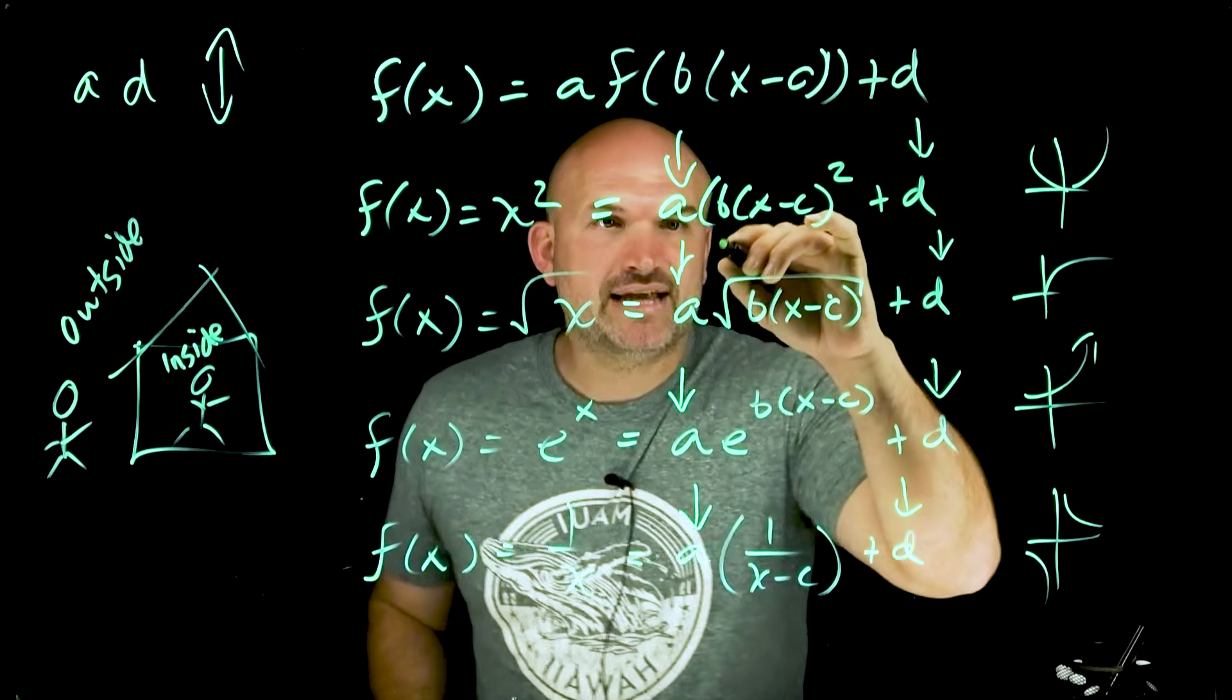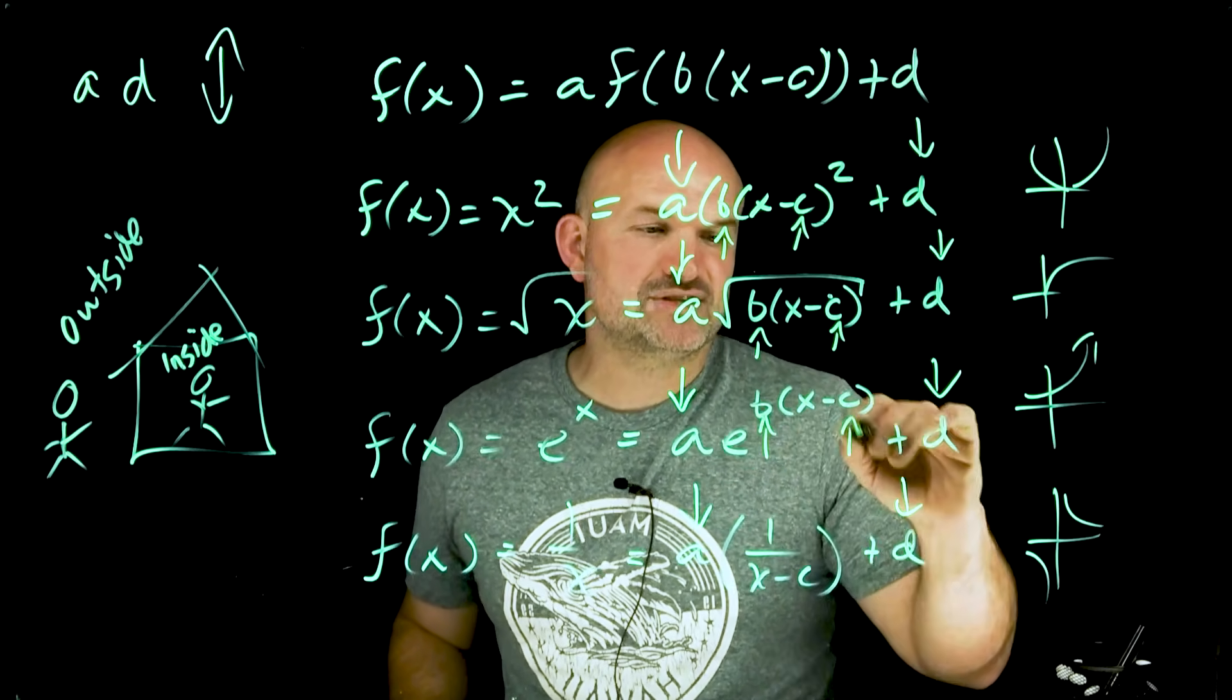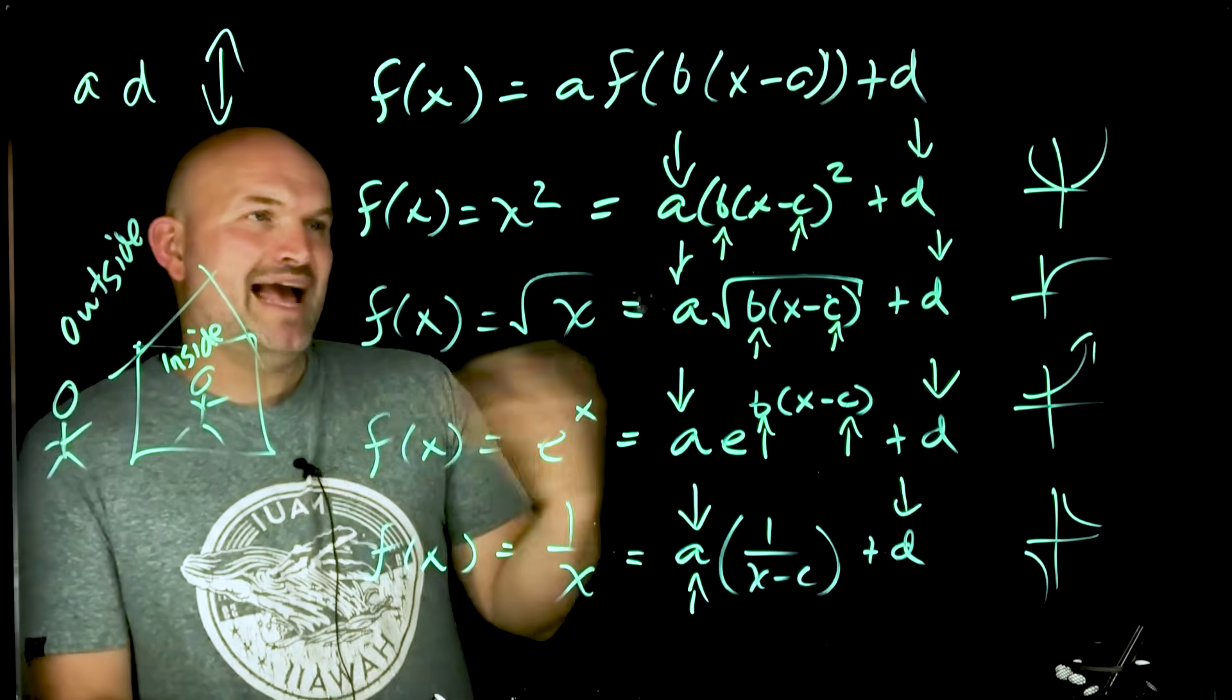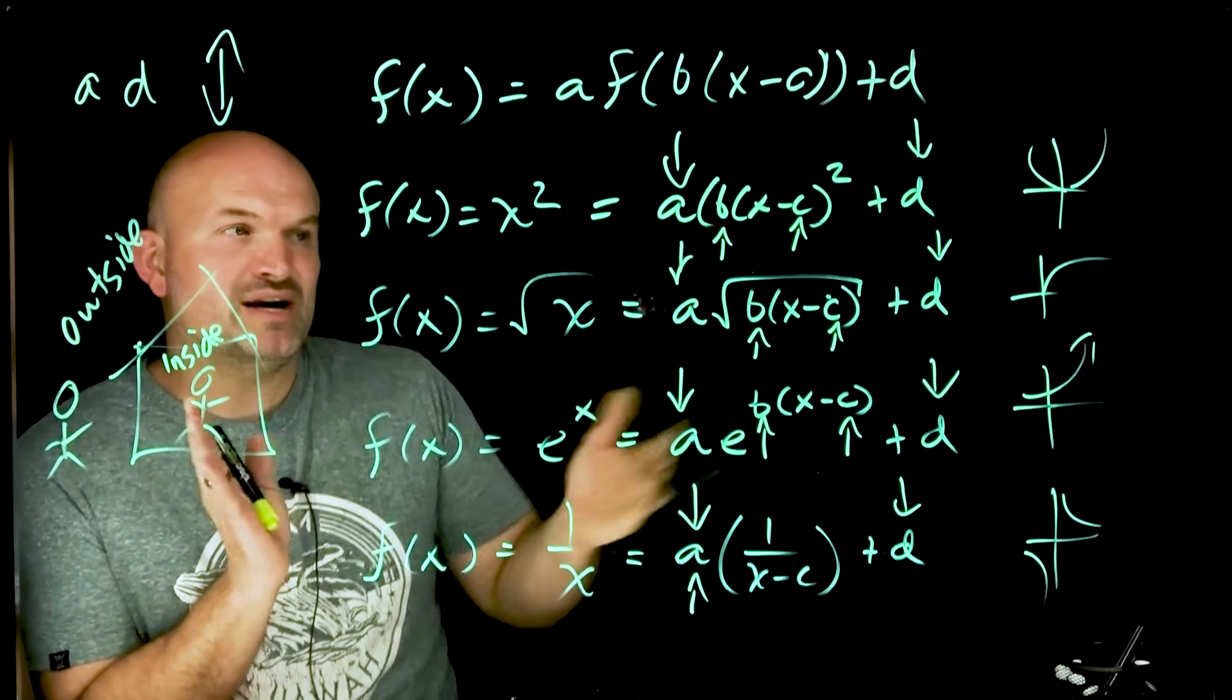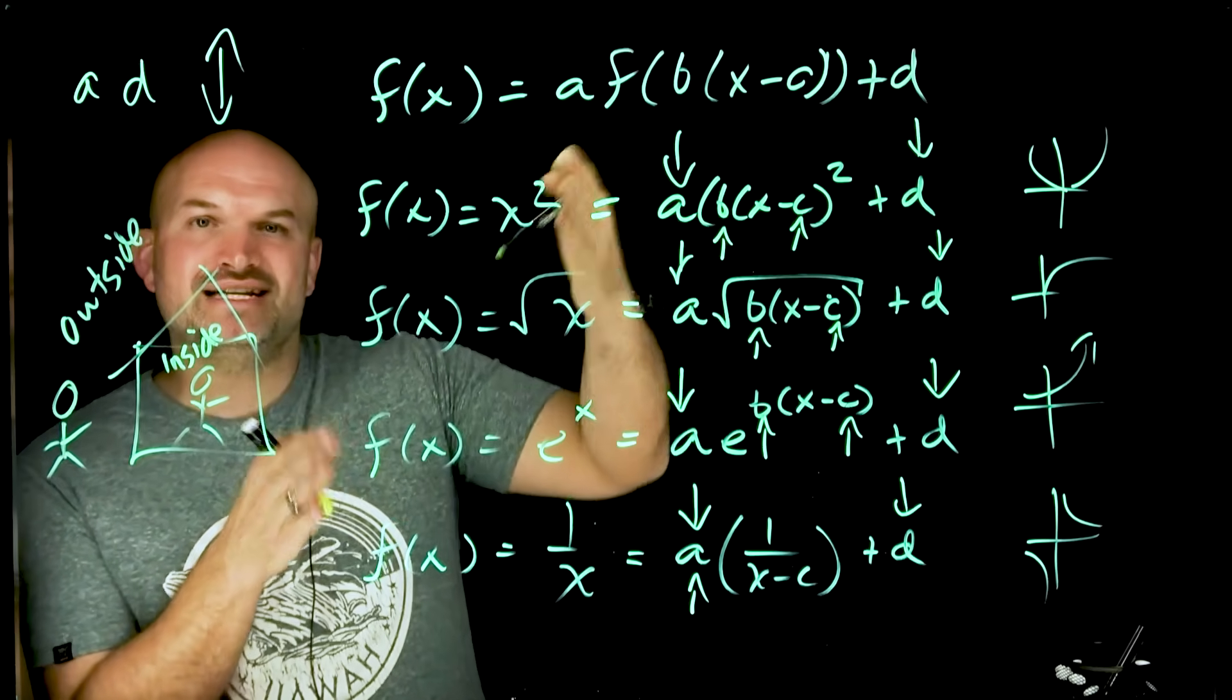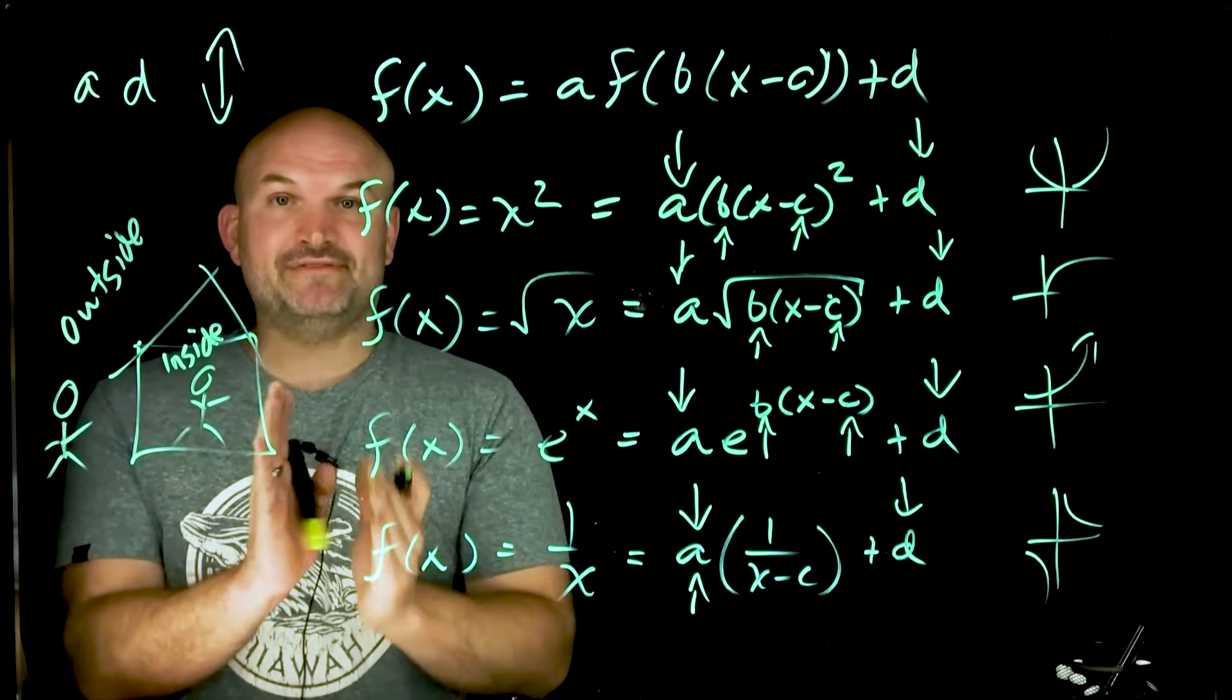So now let's look at, well, what about the B and the C? Now again, notice there's some similarities here. We don't have a B, so we'll go from there. Notice how A was multiplied, whereas D was added. B is multiplied, whereas C is going to be subtracted. So if you think about this, B has the same operation as A. It's now inside the house, so the operations are going to be different.